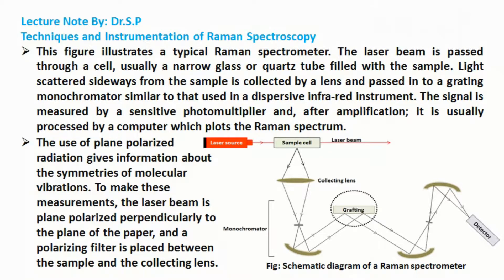The laser beam is passed through a cell, usually a narrow glass or quartz tube filled with the sample. Light scattered sideways from the sample is collected by a lens and passed into a grating monochromator, similar to that used in a dispersive infrared instrument. The signal is measured by a sensitive photomultiplier and, after amplification, it is usually processed by a computer which plots the Raman spectrum.